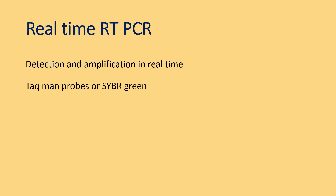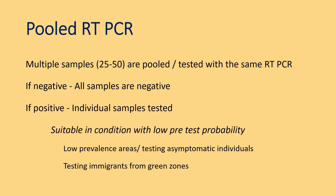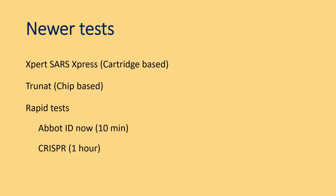TaqMan probes or SYBR green dyes are used in a single-step process to obtain results in a real-time manner. Pooled RT-PCR is where multiple samples are pooled and tested together. If the result is negative, all samples are negative and can be discarded; if positive, individual samples are tested. This is suitable in conditions with low pre-test probability, such as low-prevalence areas and testing immigrants from green-zone countries.